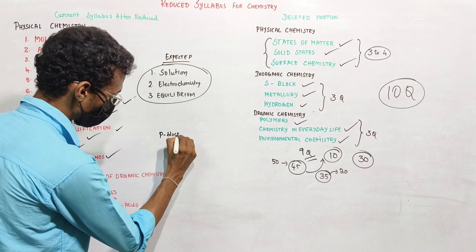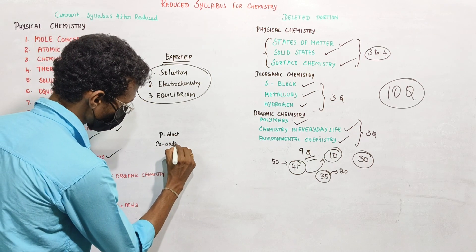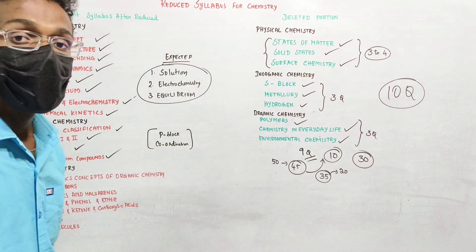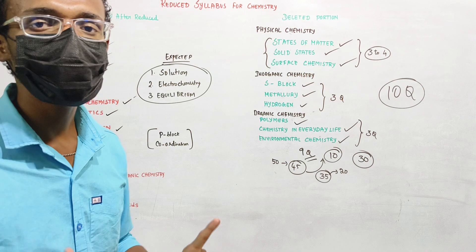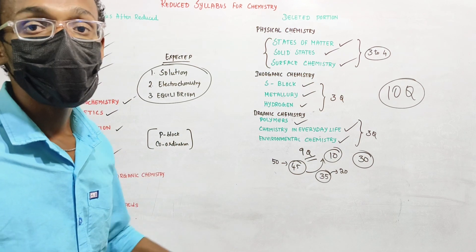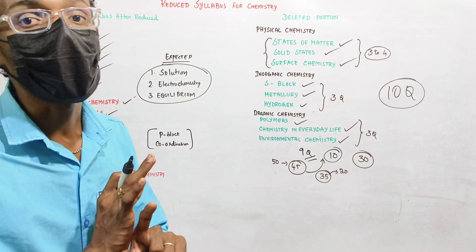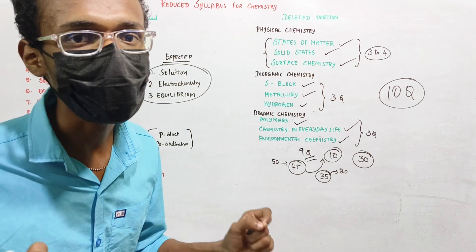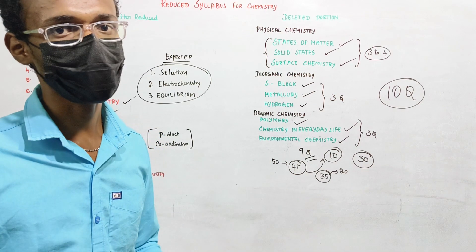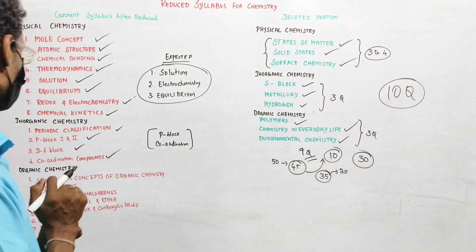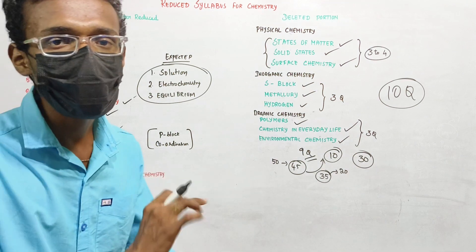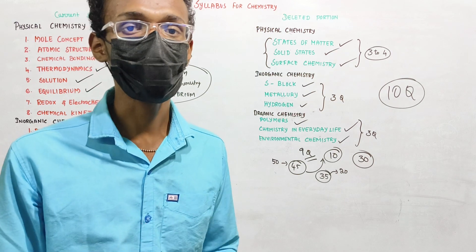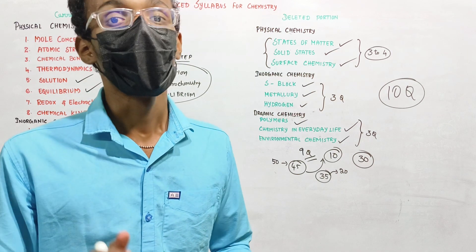P-Block Elements and Coordination Chemistry are next. From Coordination Chemistry, you can expect around two questions. Students should note that CBSE has released updates regarding P-Block in the revised syllabus.